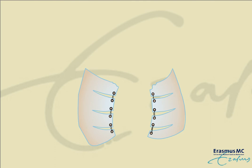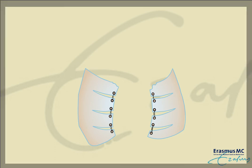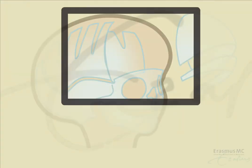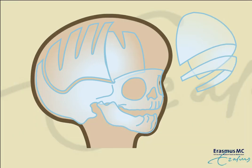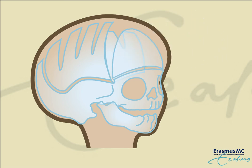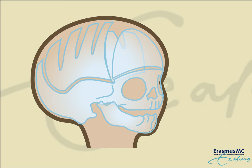The more curvy bones are then repositioned. The bossing of the forehead is reduced by removing a rim of bone at the lower border of the forehead, and by tilting the bone backwards when it's put back into place.